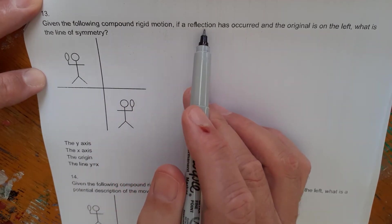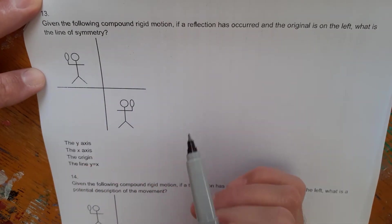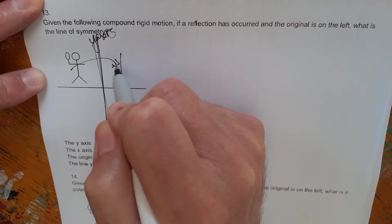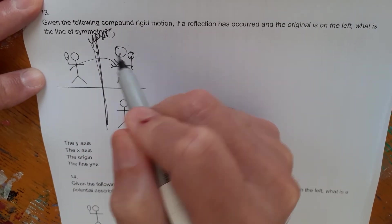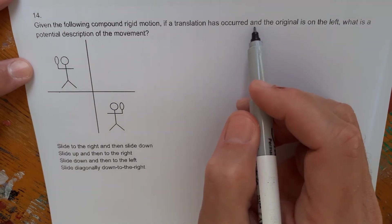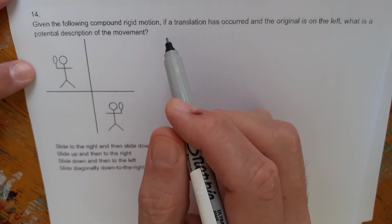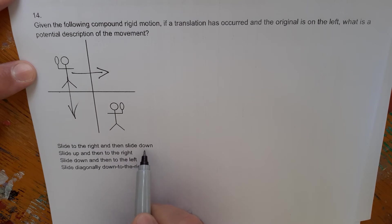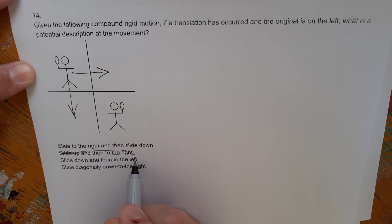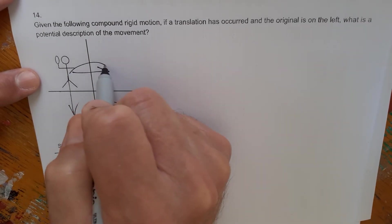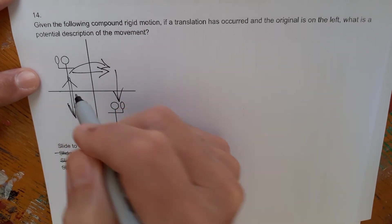For the compound rigid motion question: if a reflection has occurred, what is the line of symmetry? The answer is the y-axis, since the figure is flipped over with the object now on the other side. Then, if a translation has also occurred, what is the potential description of movement? The options include slide to the right then down, slide down then left, slide diagonally, etc.